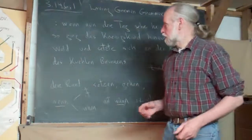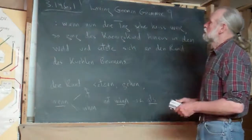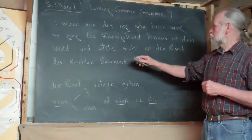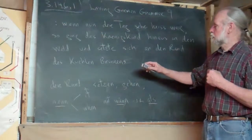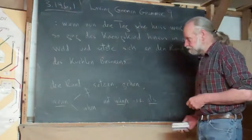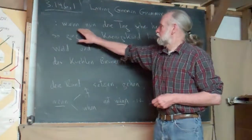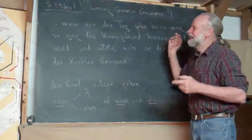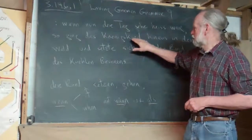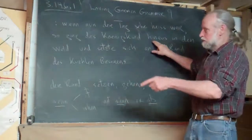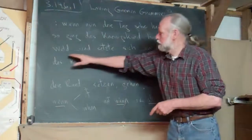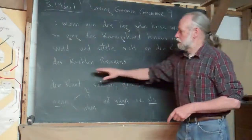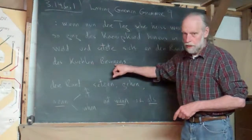Okay, well, the next sentence in the story goes like this. Let me translate it: 'If, or when, the day was very hot, so went the king's child there out into the wood and set herself at the edge or rim of the cool well.'